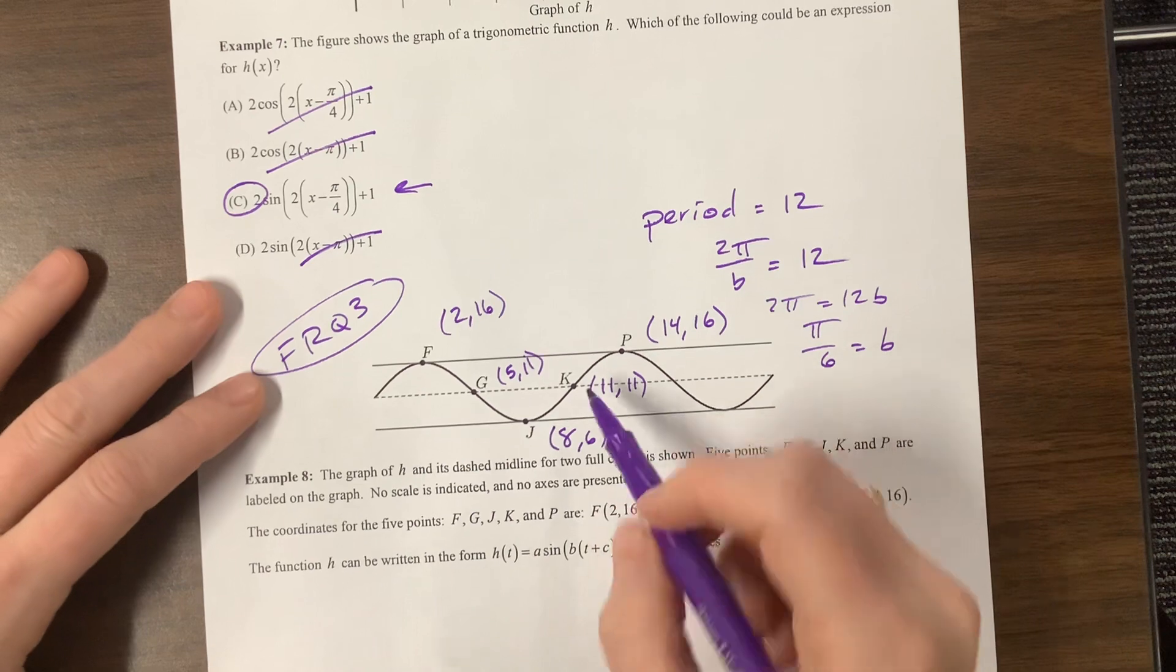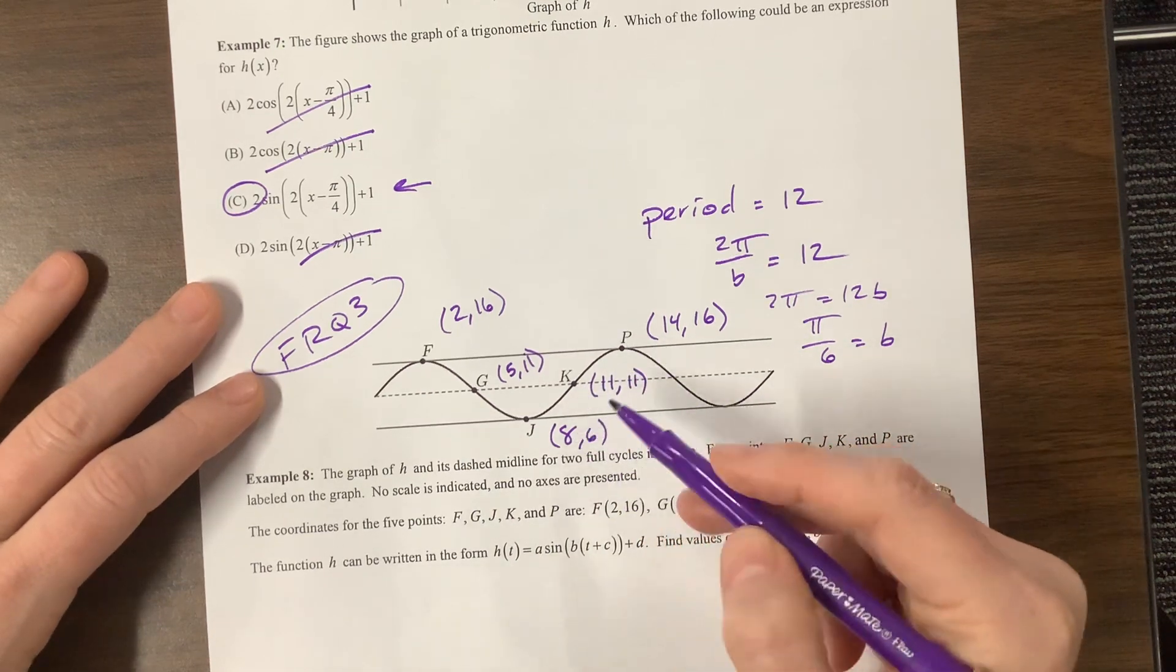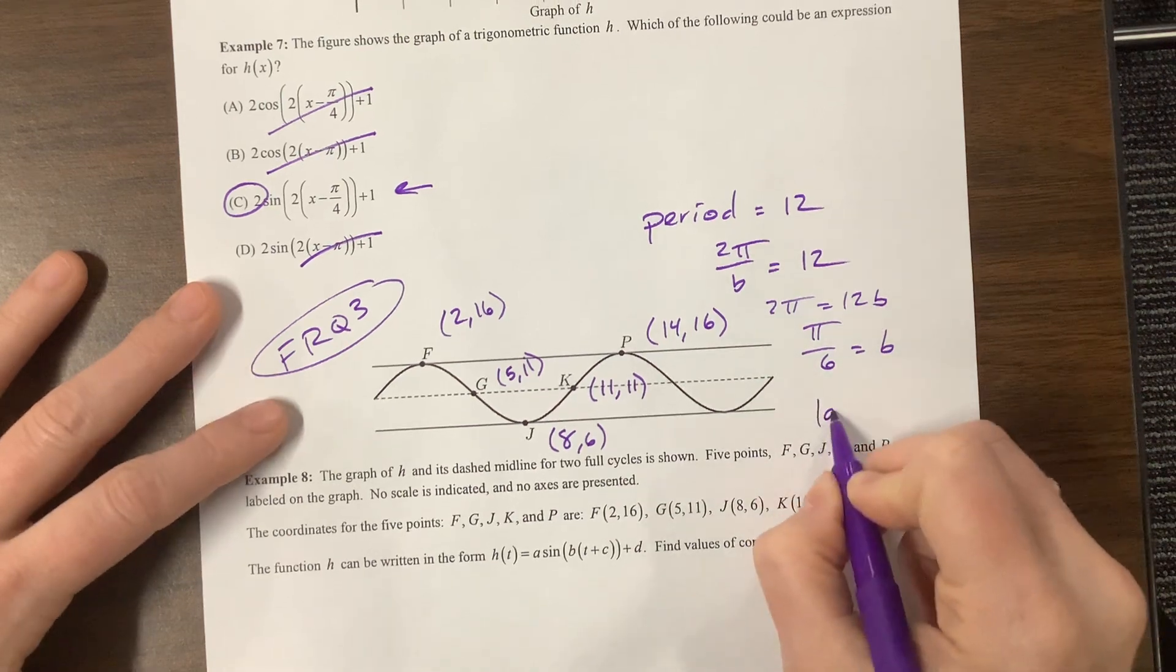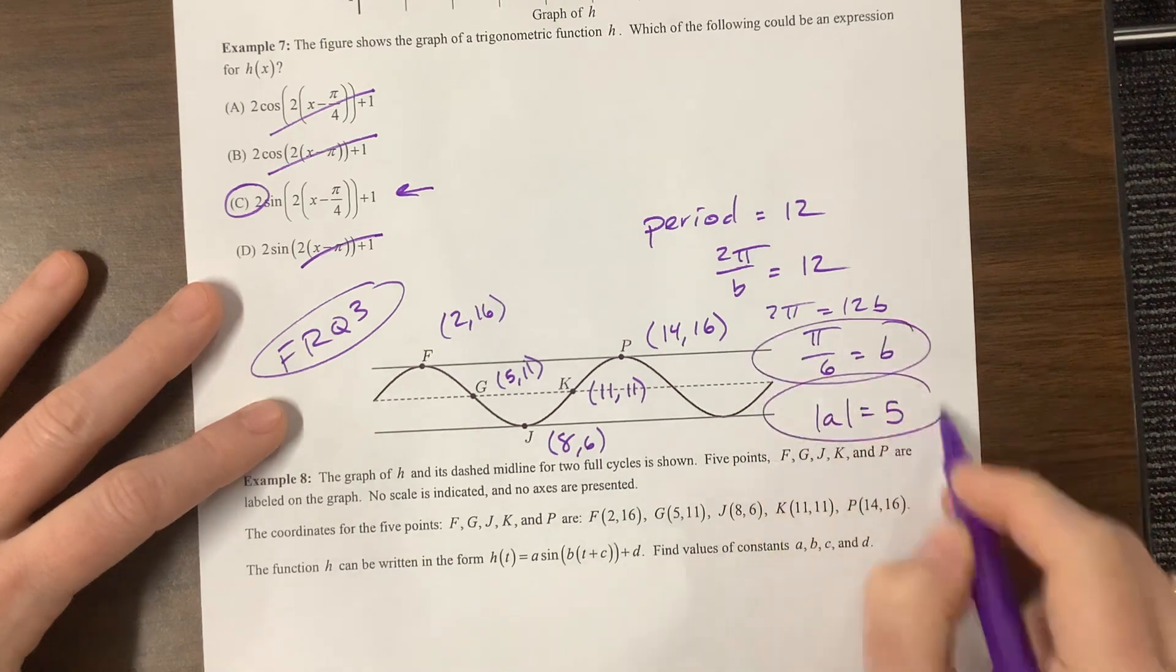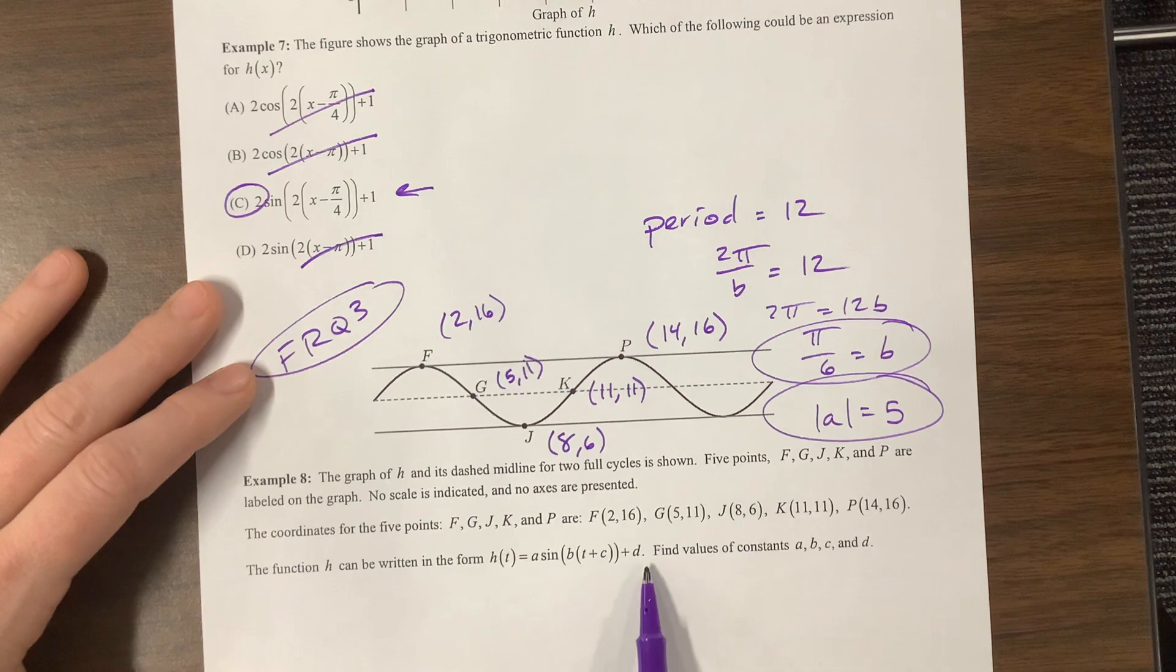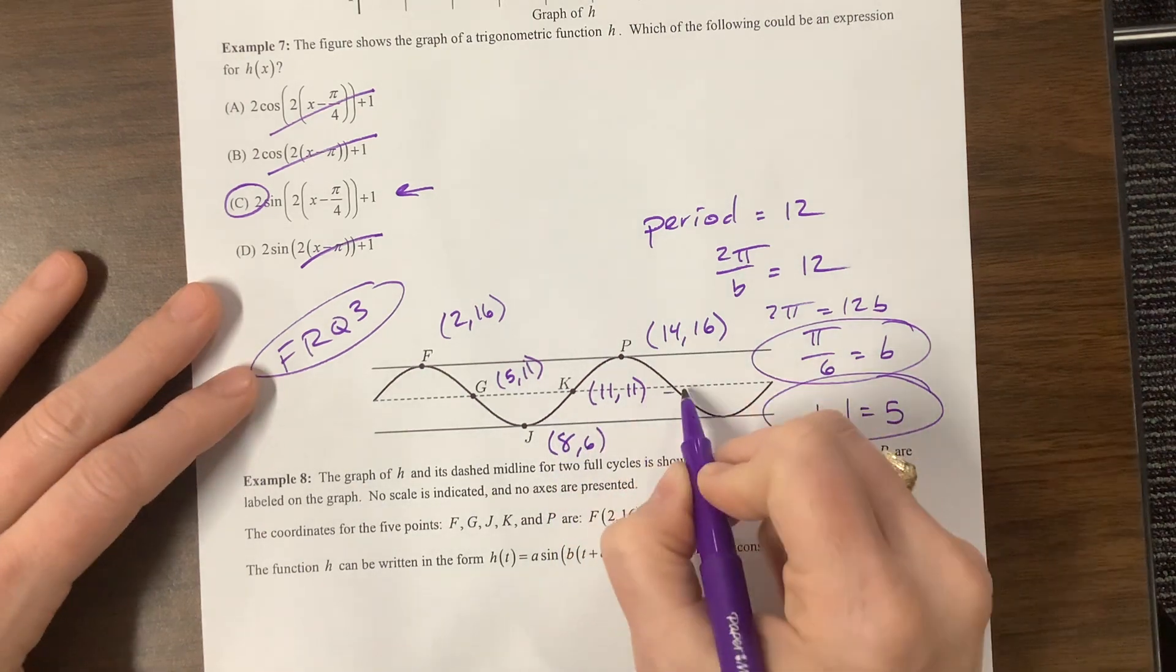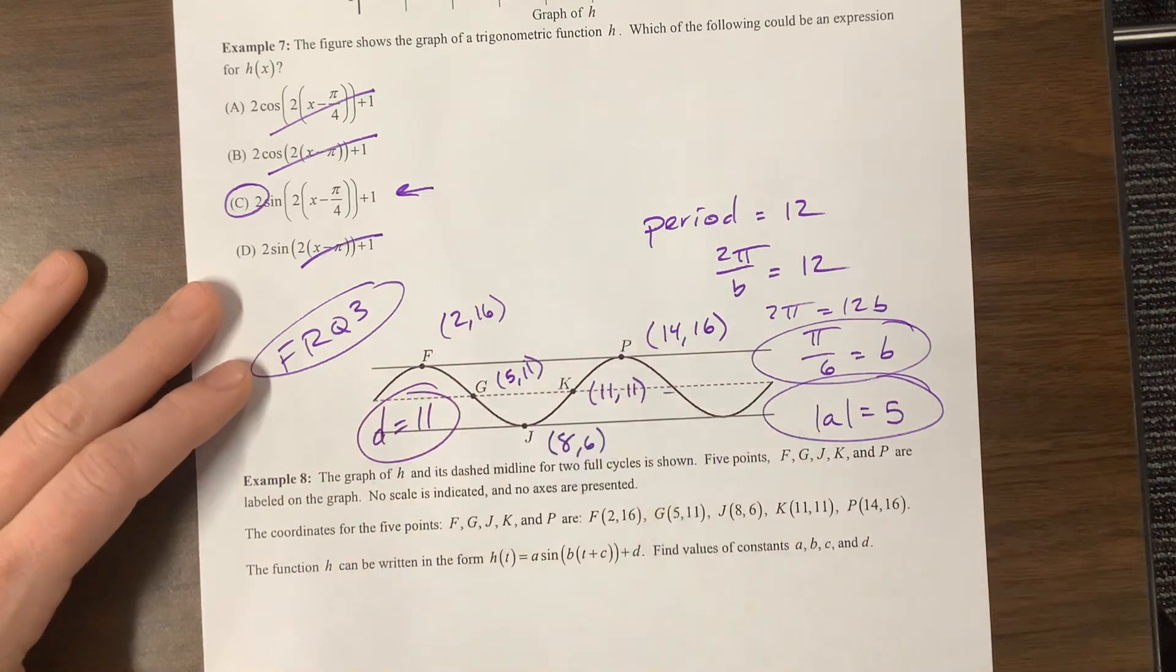My amplitude is how much did I go above my midline? Well, I went 5 units above and 5 units below. So the absolute value of a is definitely going to be 5. We have this so far, and we need to see what kind of shift up do we have. Well, shifting up, my d value is where this midline is - this d value equals 11.